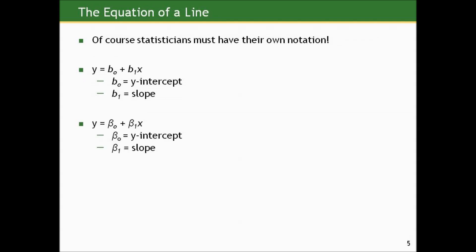In statistics, we've got to have our own notation. Other ways to write the same equation: y equals β0 plus β1x, where β0 is the y-intercept and β1 is the slope. This is the notation we're going to use when we deal with regression.